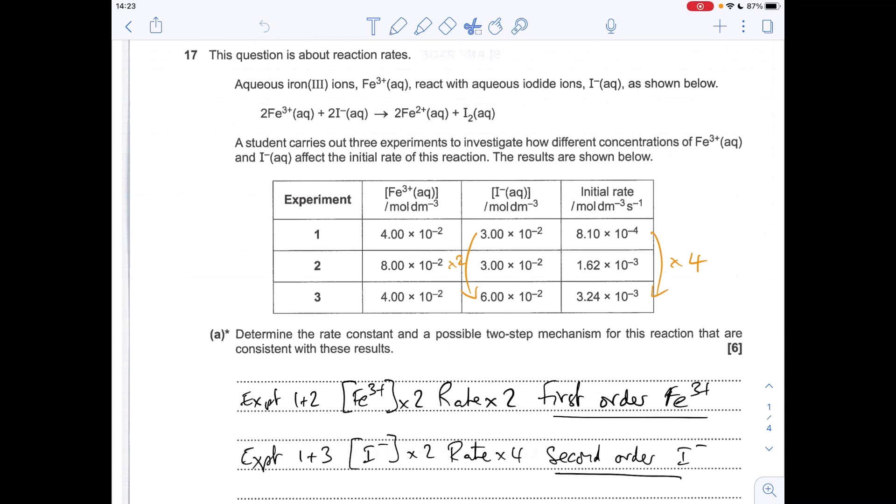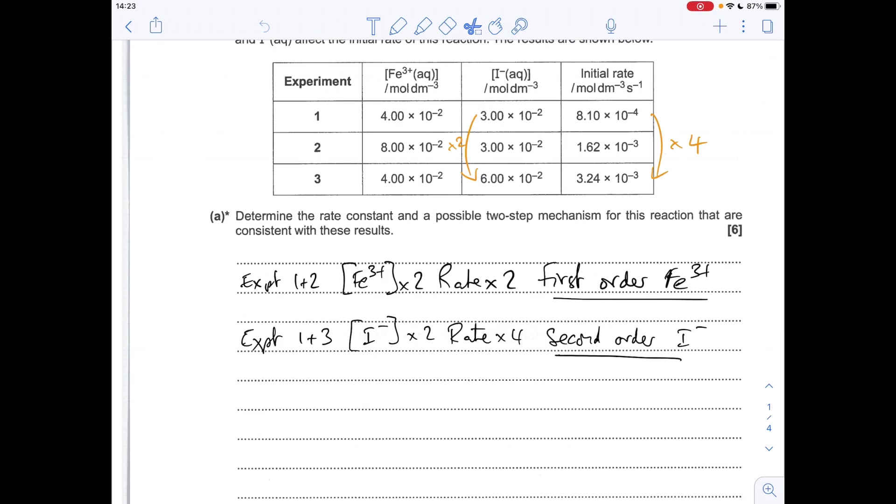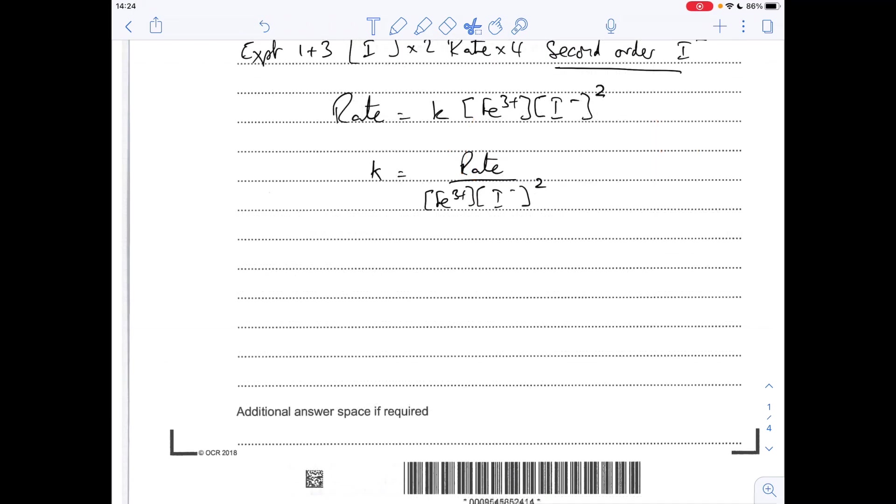So now we've got the orders, we can write the rate equation, which looks like that. We rearrange to get K as the subject of the equation, and then we're just going to insert the results for, I'm going to use experiment 1. It doesn't matter which experiment you use, because these were all carried out at the same temperature, so it will give the same value for K. So there's the numerical value for the rate constant, and now we're going to do the units. It doesn't actually tell you to work out the units, but it expects you to, so always do that.